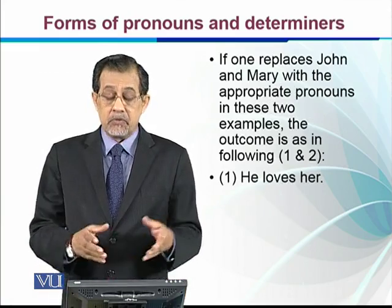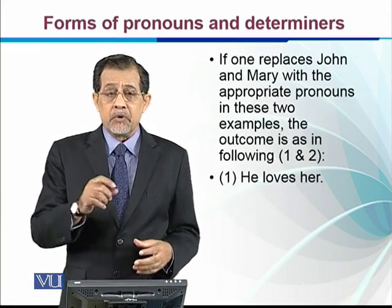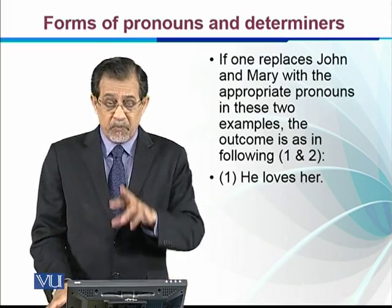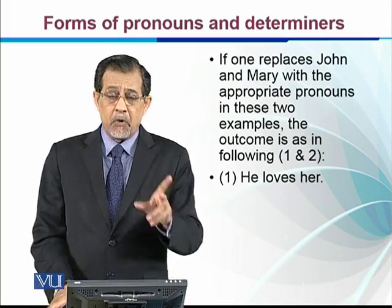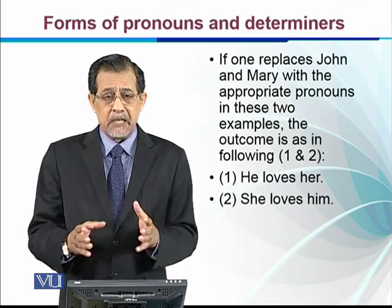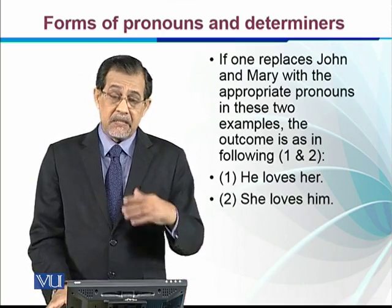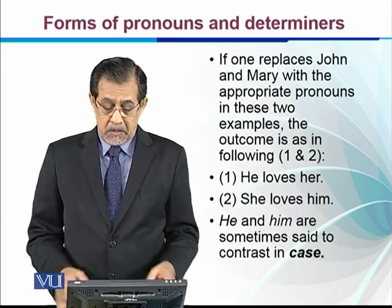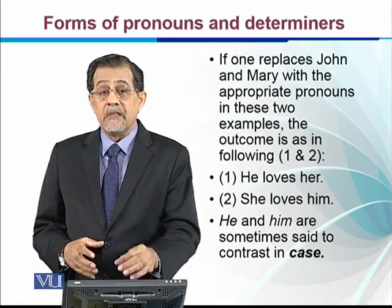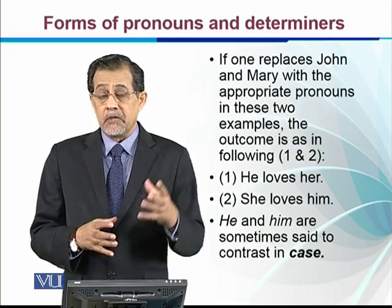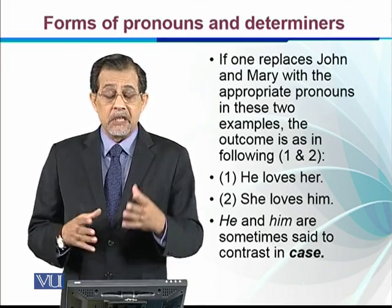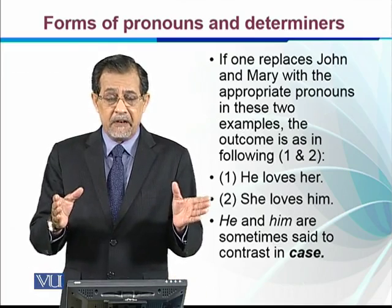For example: 'He loves her' — 'he' is used as subject and 'her' is used as object. But when their order is changed, their form also changes: 'She loves him.' So their forms change as their order changes, whereas with nouns this does not happen. 'He' and 'him' are said to contrast in case. English has nominative case, accusative case, and possessive or genitive case, and their forms are different from each other.